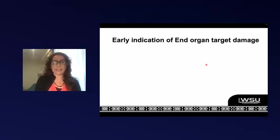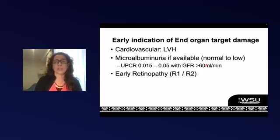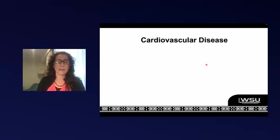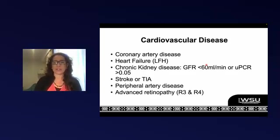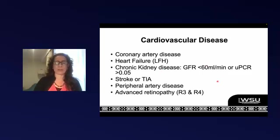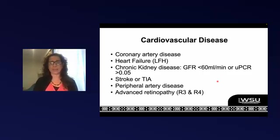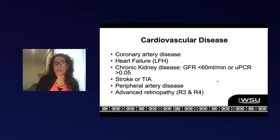Patients automatically considered moderate or high risk are those with evidence of end organ target damage — for example, left ventricular hypertrophy, proteinuria even when GFRs are still acceptable, or early retinopathy. Anyone who already has cardiovascular disease is considered high risk: prior heart attack or stroke, angina, chronic kidney disease, or more severe retinopathy. You won't know these if you don't look for them, so examine and assess your patients properly at diagnosis, including an ECG.